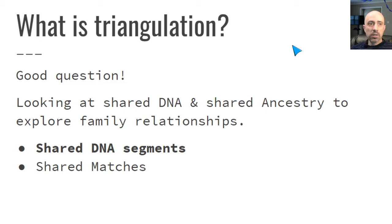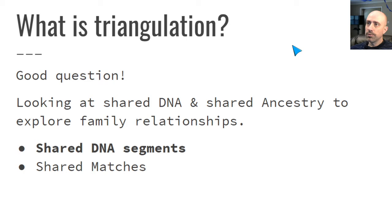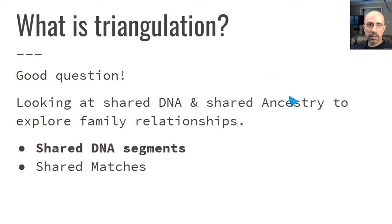What is triangulation? The simple answer is that we're looking at shared DNA and shared ancestry to explore family relationships. Unfortunately, triangulation has become a very broad term. It's applied to at least two very different processes in genetic genealogy. One is where we look at shared segments of DNA to find shared ancestry. Another is a process where we look at lists of shared matches — matches that maybe you and I share — and go through that list of matches to look for what's in common. These are really very different processes, and it's unfortunate that triangulation has been used to describe both.